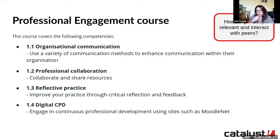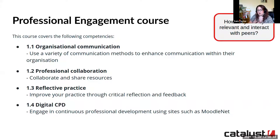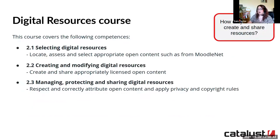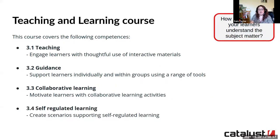Looking at the competencies, you have the six areas with the competencies within them. The professional engagement course is about how you stay relevant and interact with peers — the course gives ideas of how you could do that using Moodle tools both internally and externally, and asks you to reflect on your current practice. The digital resources course talks about how you source, create and share resources internally and externally, and whether you think about things like Creative Commons.